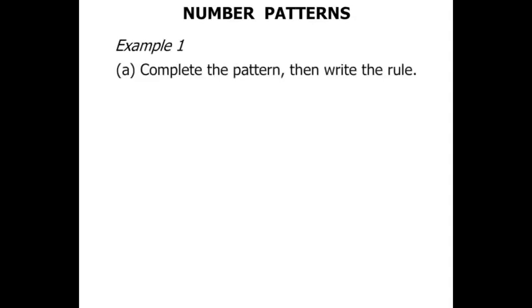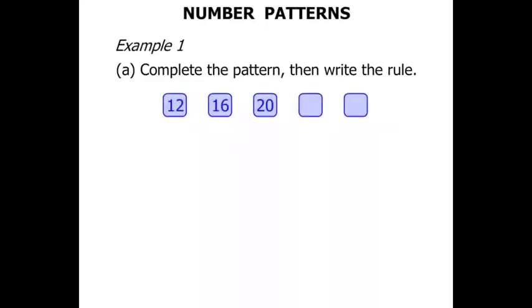In this lesson we do some work on number patterns. Example 1: complete the pattern then write the rule. We have three numbers already there with two missing numbers. We need to write the rule after we complete the pattern. Let's see how we go.